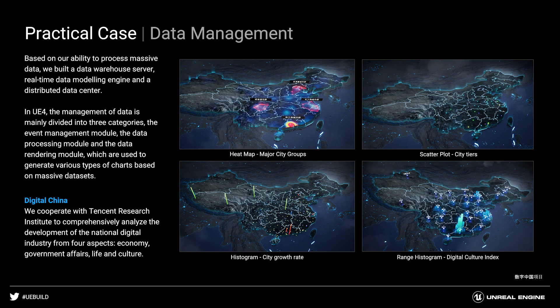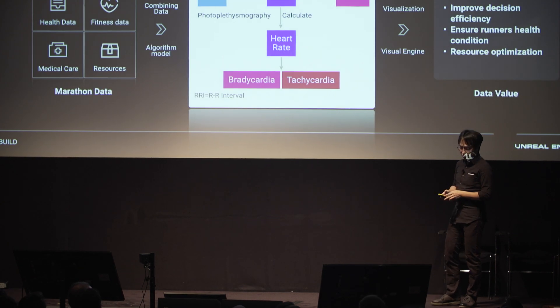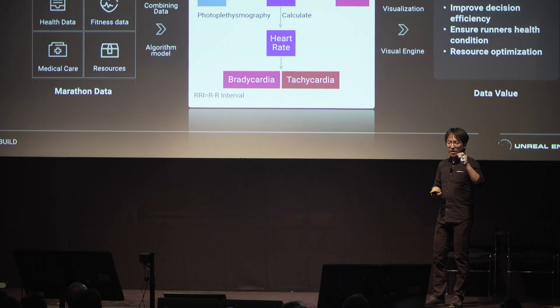Based on the ability to process big data, we built a data warehouse service. In Unreal Engine, the management of data is divided into three parts: data events, processing, and rendering — which are used to analyze, rebuild, and generate different types of results into information graphics for the user. In Yangzhou Marinson 2018, we used an RRI analyzed model to predict abnormal data, so we can further assist in medical rescue services, event security, tracking abnormal situations, and emergency response.